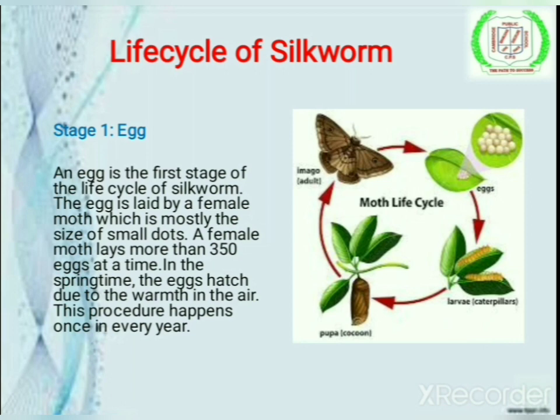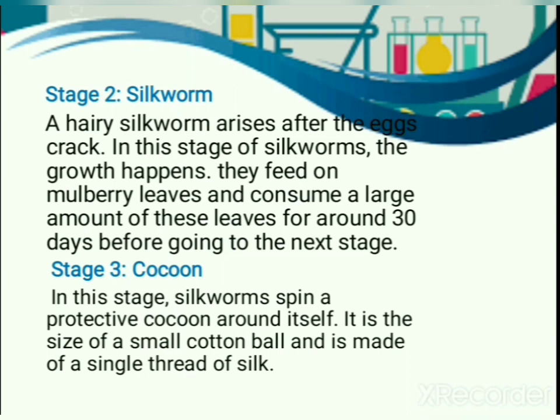The second stage is the silkworm. A hairy silkworm arises after the eggs crack. In this stage, the growth happens. They feed on mulberry leaves and consume a large amount of these leaves for around 30 days before going to the next stage.